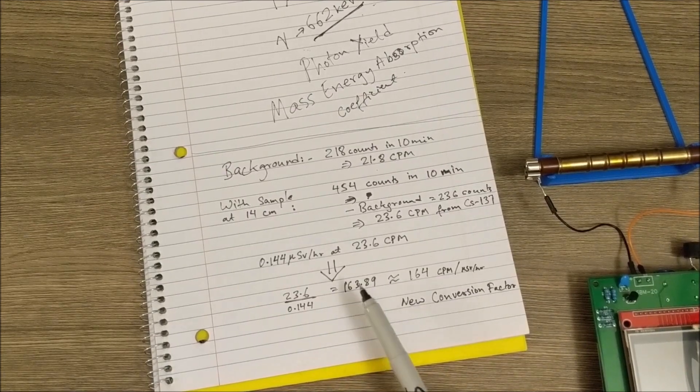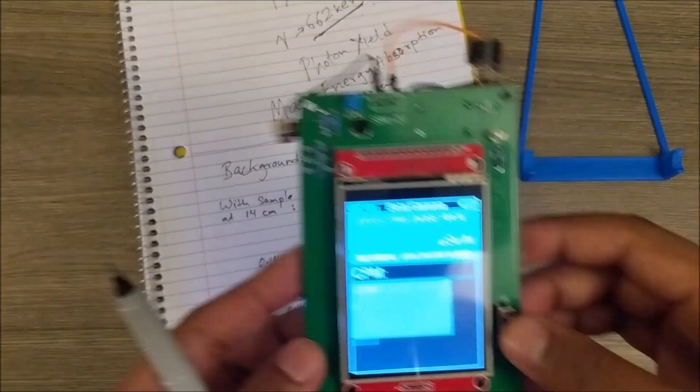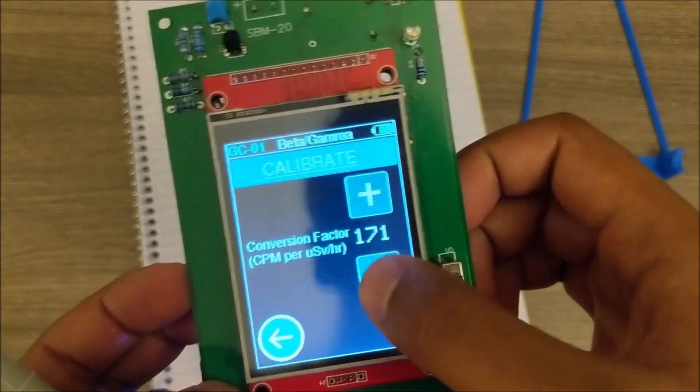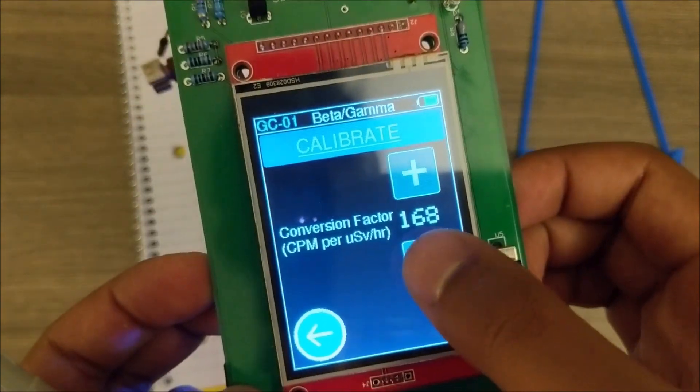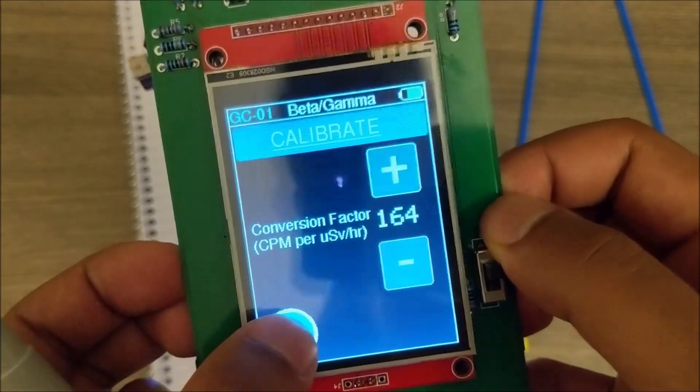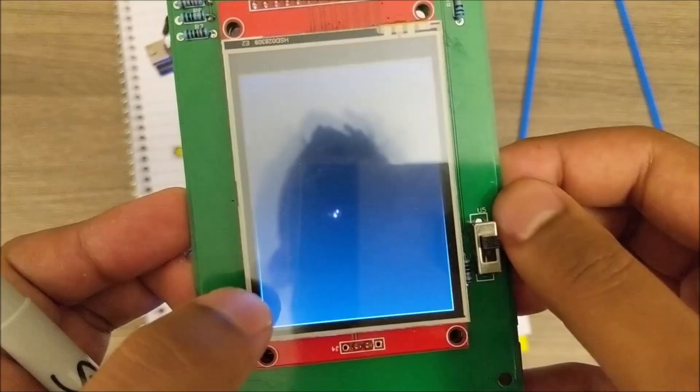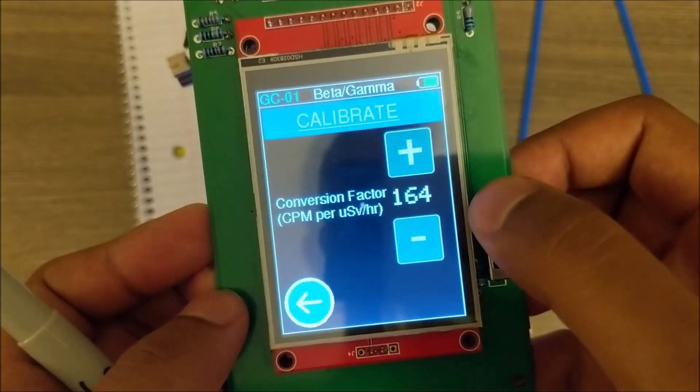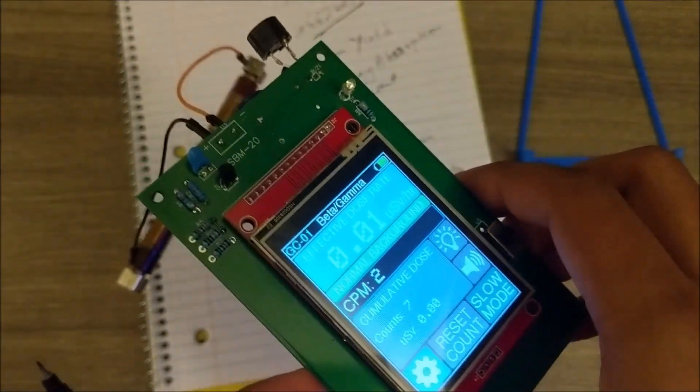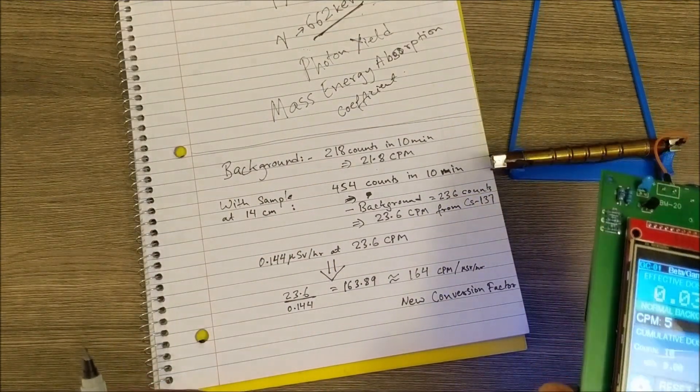I'm just going to go into the settings and change that to 164. This is going to be saved into the EEPROM or the primary memory, so it's going to be there when I reset. Yep, so that's our new conversion factor, and that's a calibrated Geiger tube. Let me know if you have any questions or comments. Thanks for watching.